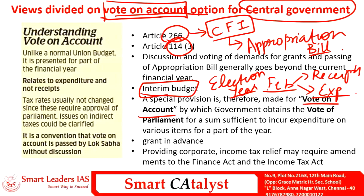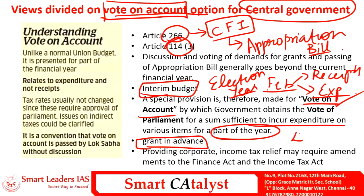Such an interim budget consists of a special clause called vote on account. This is because normally in an election year the current government may continue or a new government may come in place. In such a situation, a grant is provided in advance via vote on account — the government obtains a vote of Parliament for an amount sufficient to incur expenditure for various items for a part of the year. Currently, the vote on account will deal with expenditure for four months, that is from February to June. Unlike the union annual budget, vote on account does not deal with the receipts part; it deals only with the expenditure part. There is no exclusive provision in the constitution for vote on account; it is usually a convention, and it is passed in Lok Sabha without any discussion.